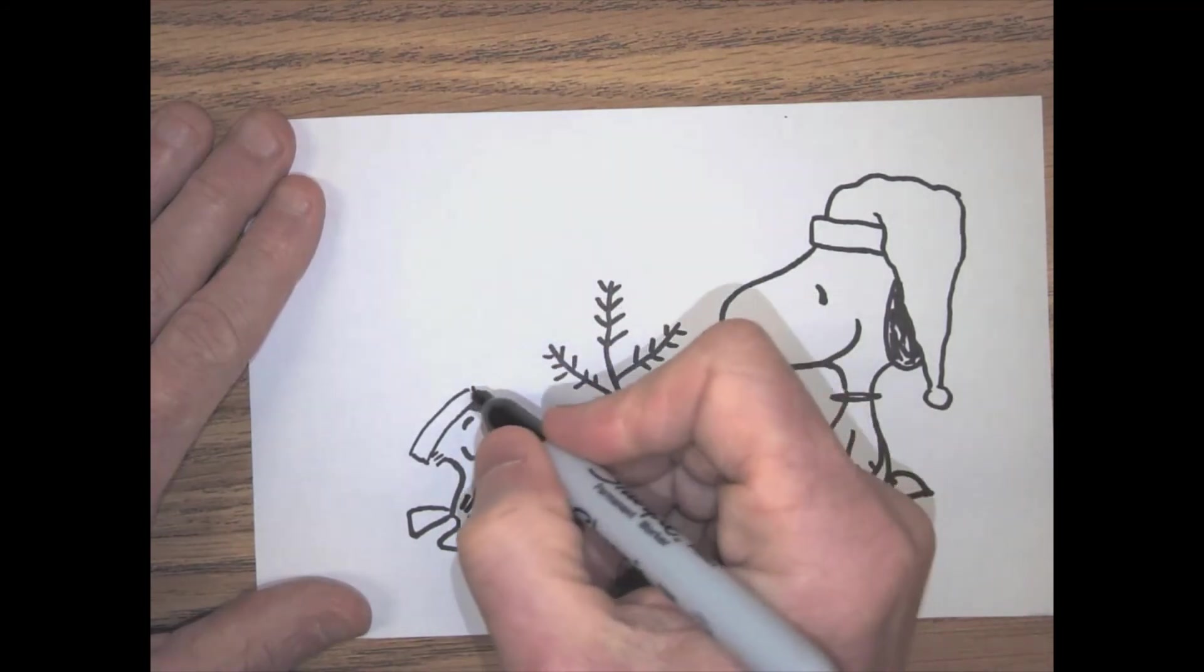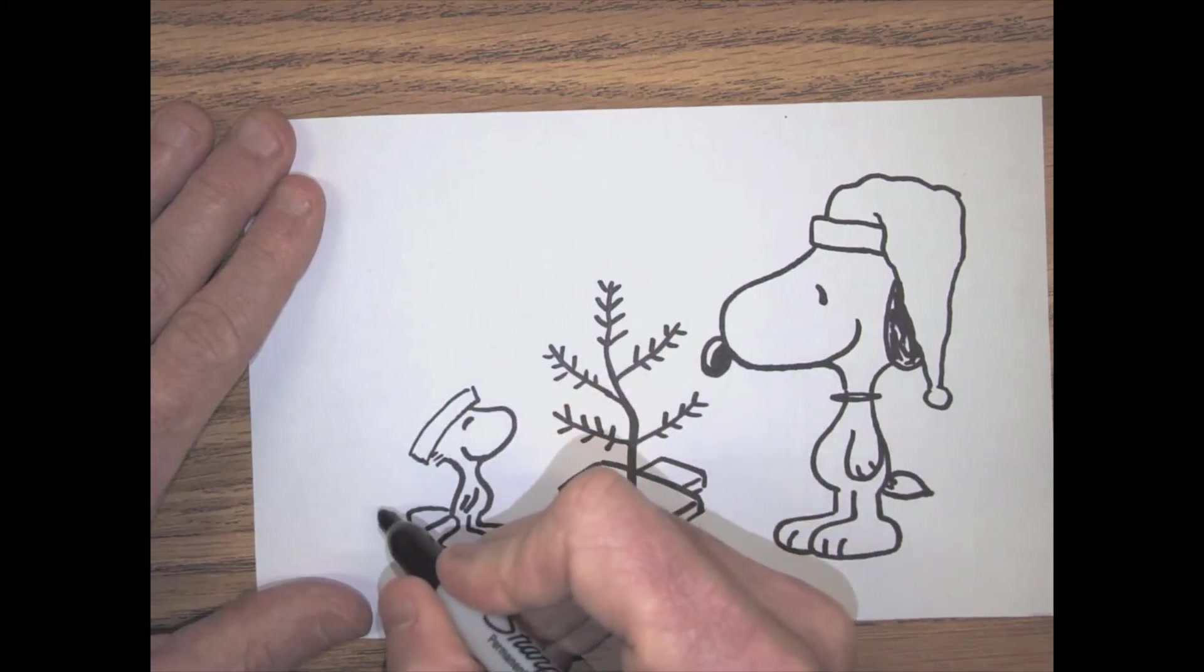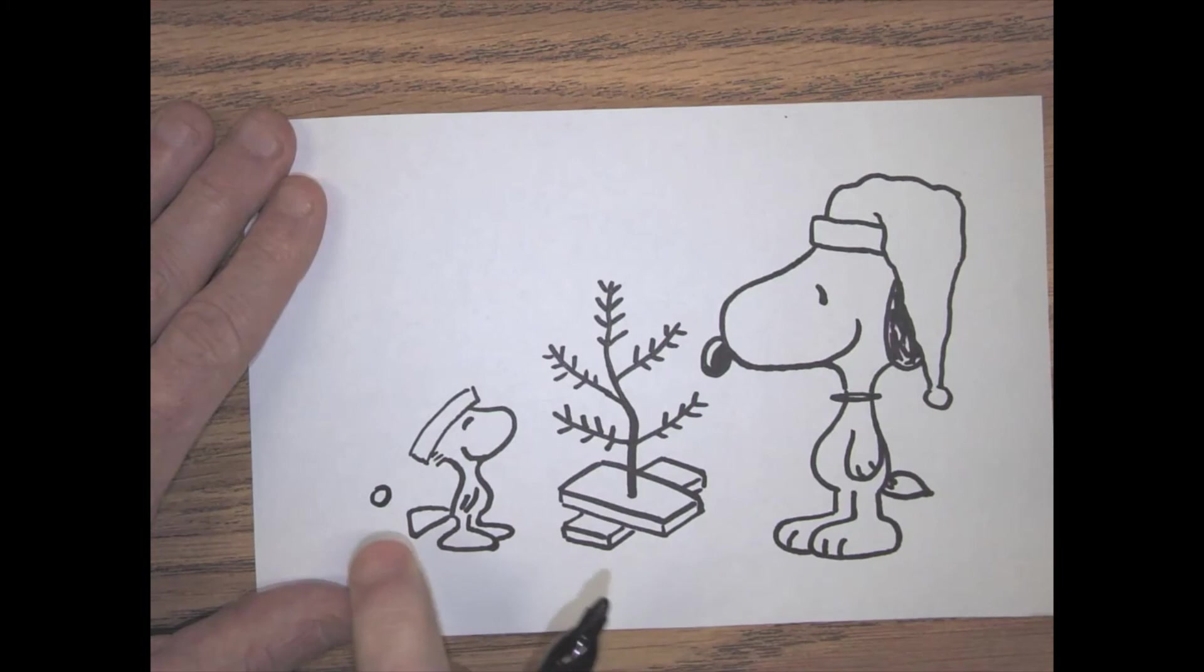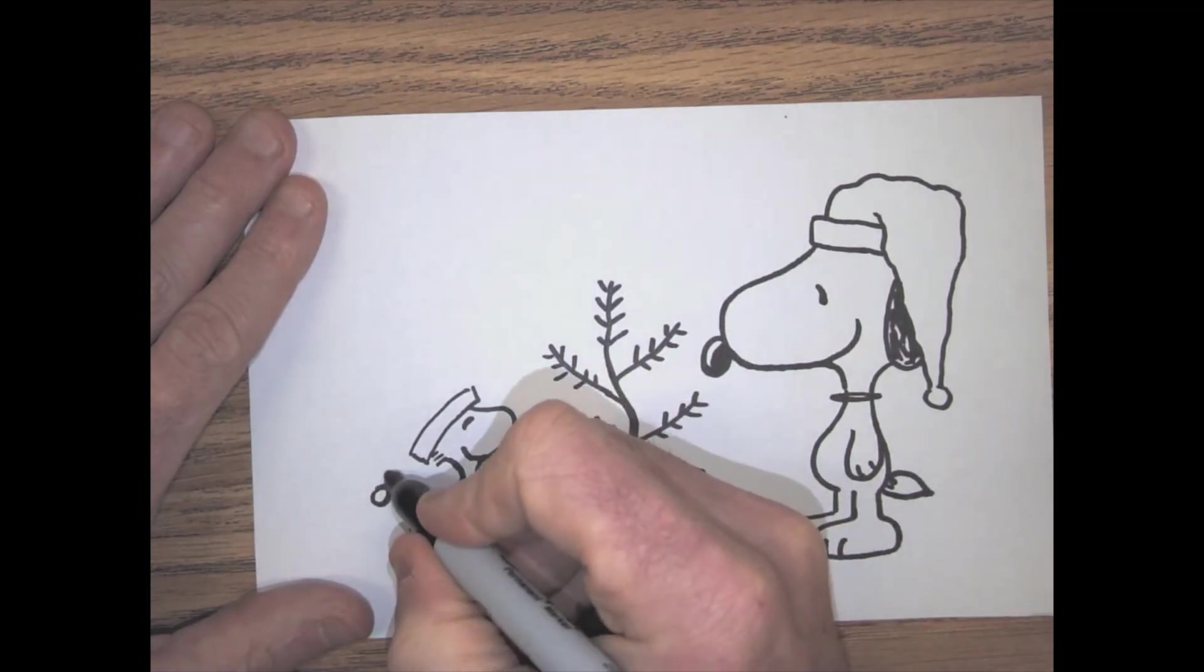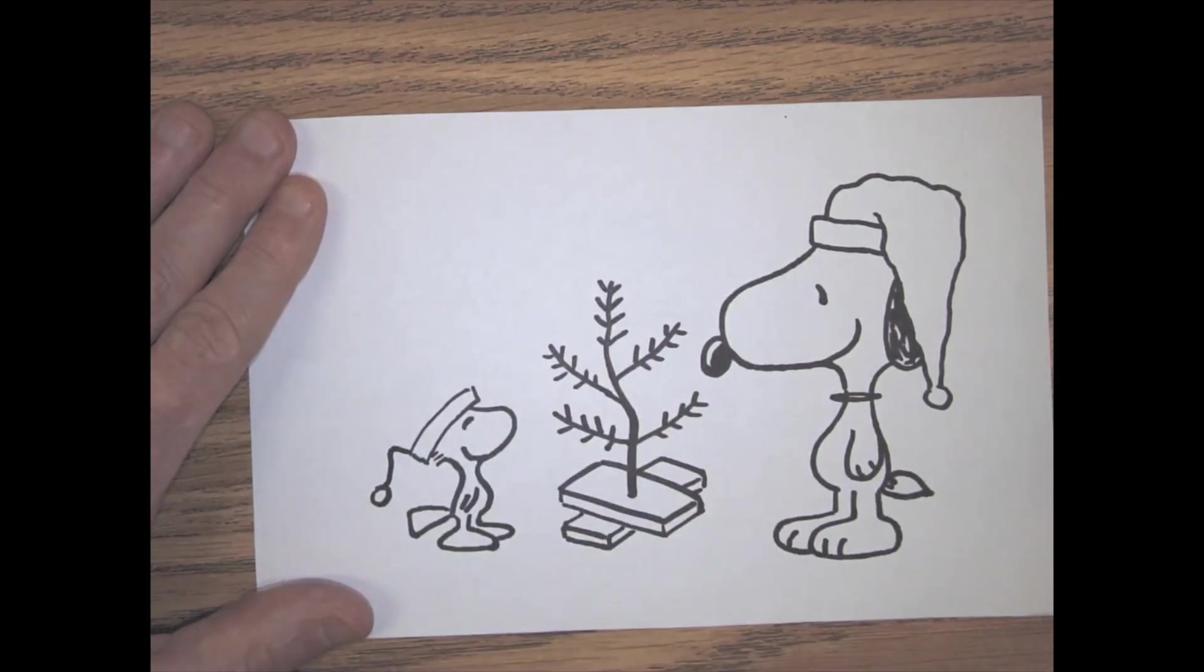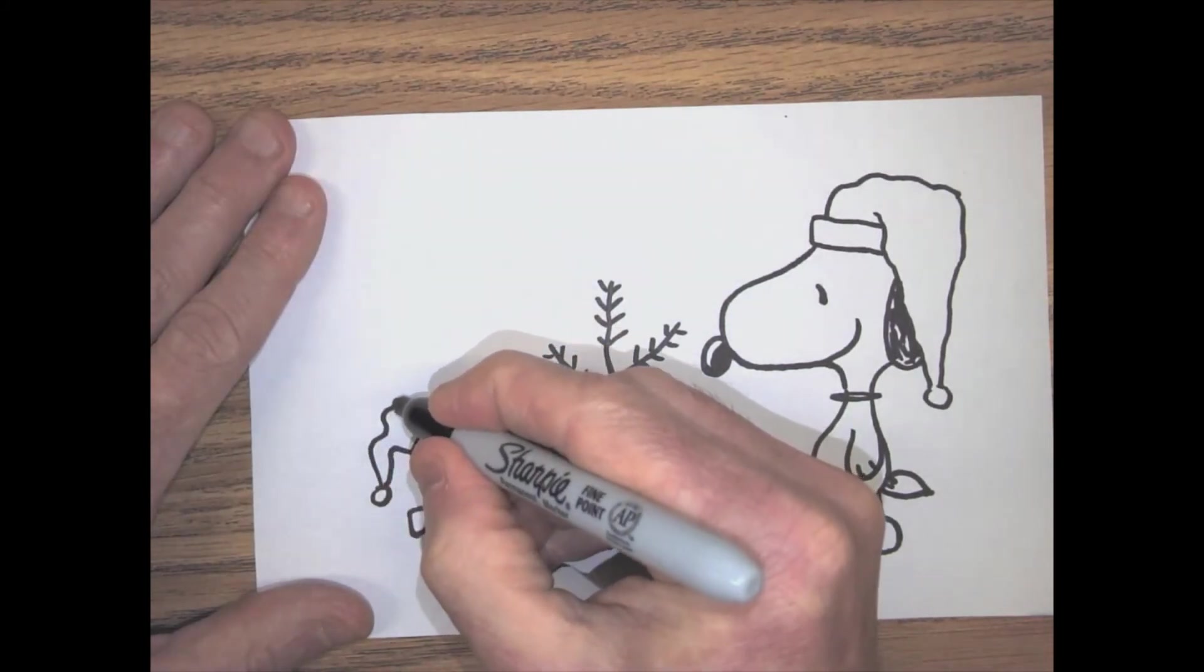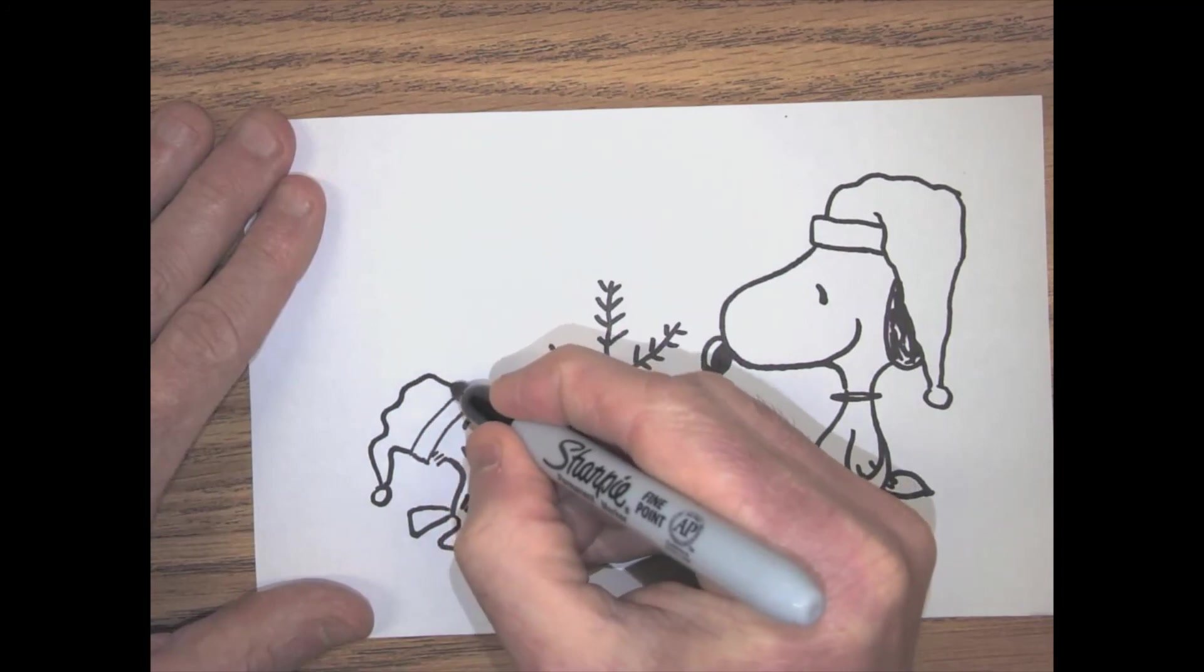All right, his hat is really big. It comes way down here. So put the ball or the little pom-pom on first, and then we'll work our way up. So this line kind of goes like that, and then the other one is kind of long and wiggly and then goes like that.